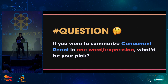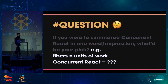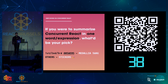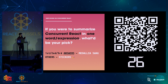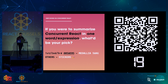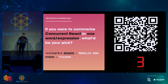I have a mental exercise for us. If you were to summarize concurrent React in one word or expression, what would you go with? For example, if I had to talk about fibers in one expression, I'd say units of work. So scan this QR code — it'll be up for a few seconds — and share your impressions about concurrent React. There's going to be some swag and stickers for whoever participates.